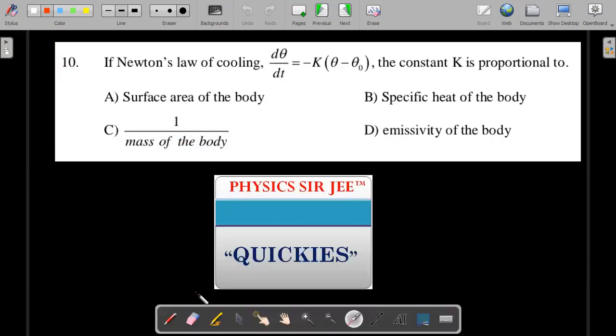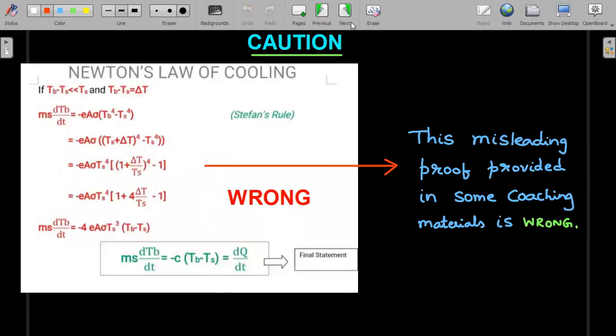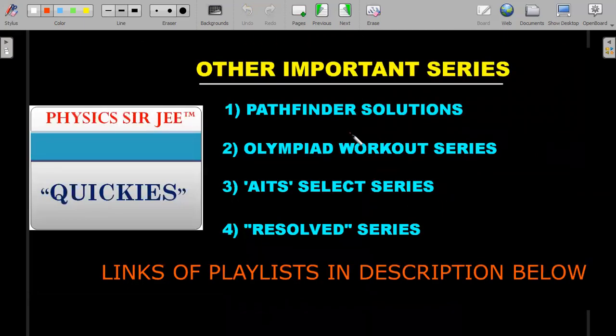Let's go back and mark the appropriate answer for this. It is definitely proportional to surface area of the body. It is inversely proportional to specific heat, so that's not correct. Inversely proportional to mass is perfect, but emissivity is in general not actually correct. That's the idea behind this law, and I hope your misconception is cleared.